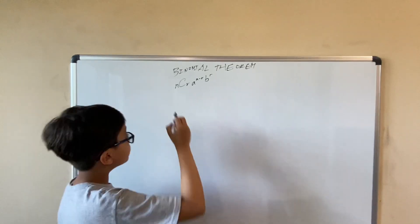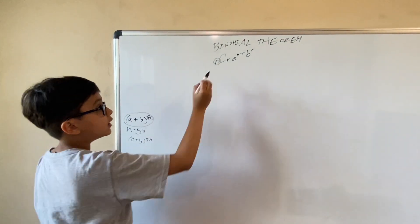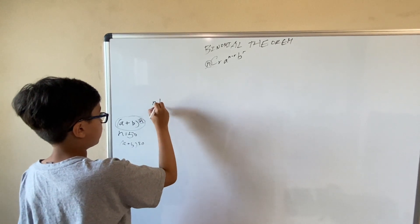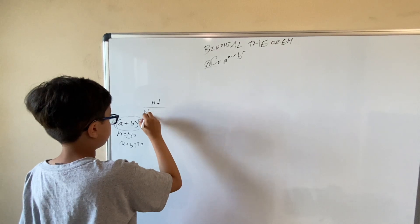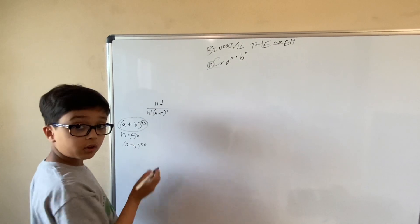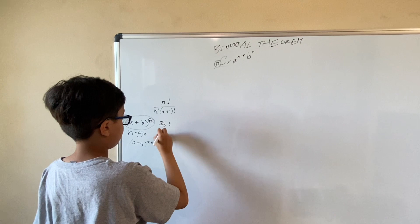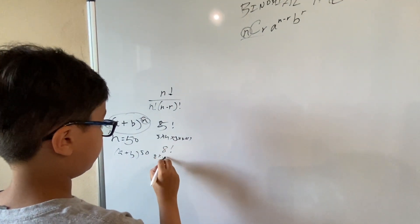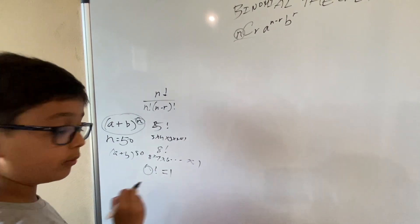Let's start with n. In the expression (a + b) to the power n, n is the power. In combination — most of you will know combination — it is n factorial over r factorial multiplied by (n minus r) factorial. Factorial is basically like: 5 factorial will be 5 × 4 × 3 × 2 × 1. 8 factorial is 8 × 7 × 6, all the way until 2 × 1. And just as a fact, 0 factorial is equal to 1.